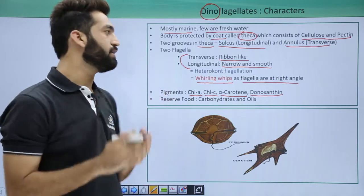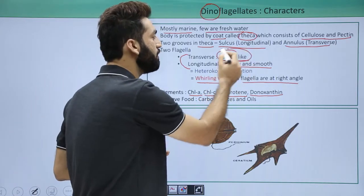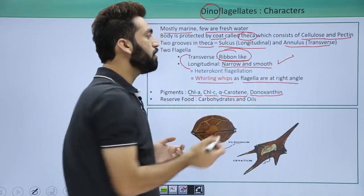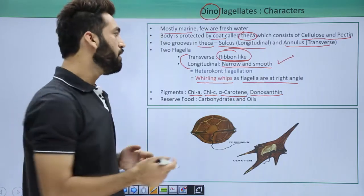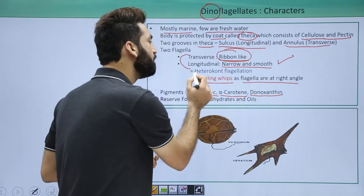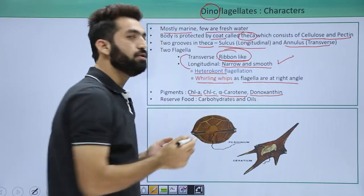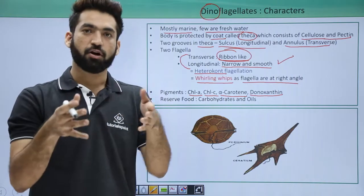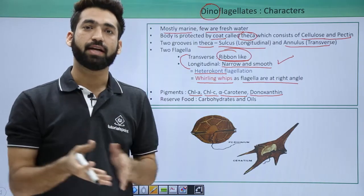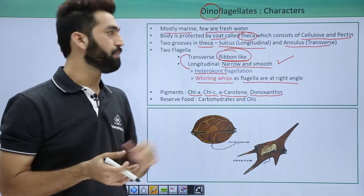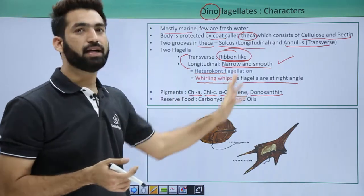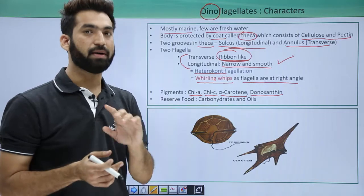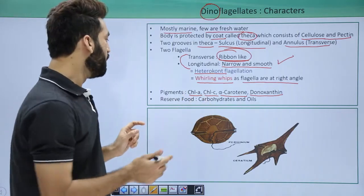Both flagella are different — one is ribbon-like and the other is heterokont or smooth. Because of these two different types of flagella, dinoflagellates are known to have heterokont flagellation. Heterokont means two different types of flagella are present.